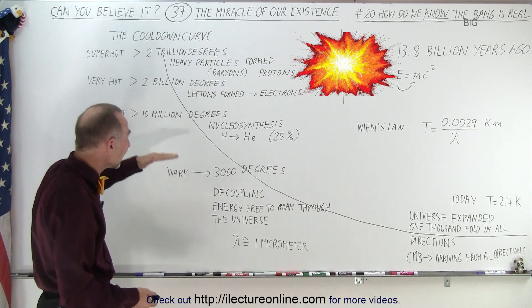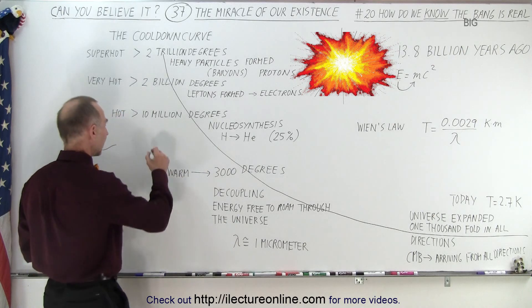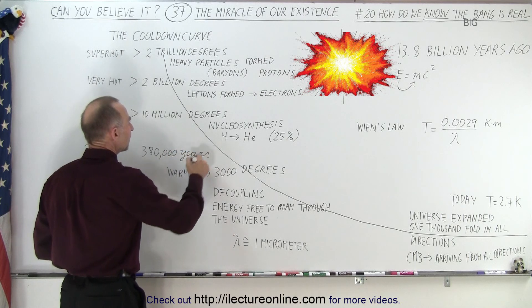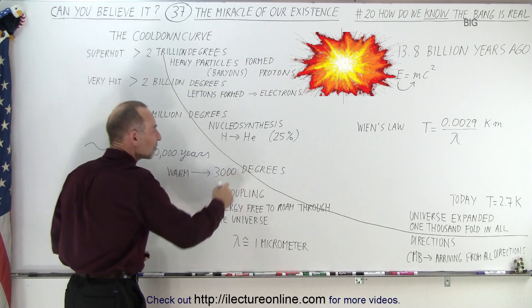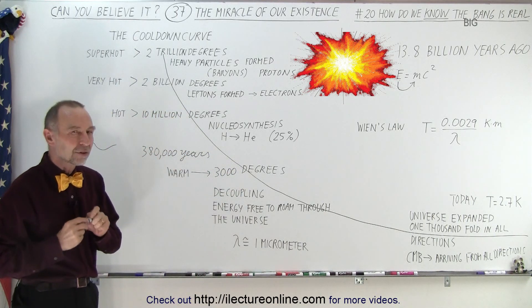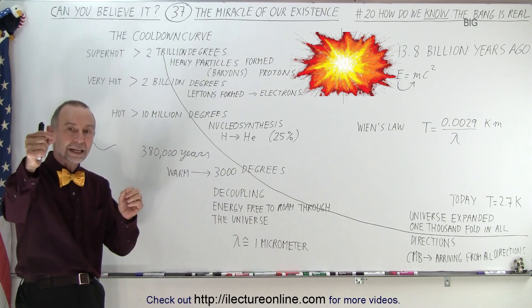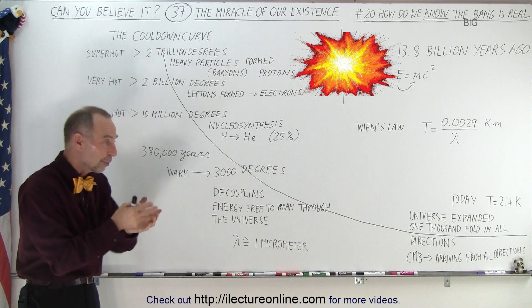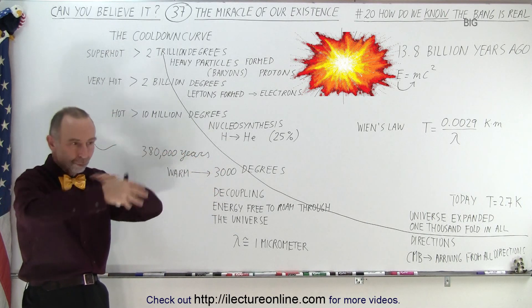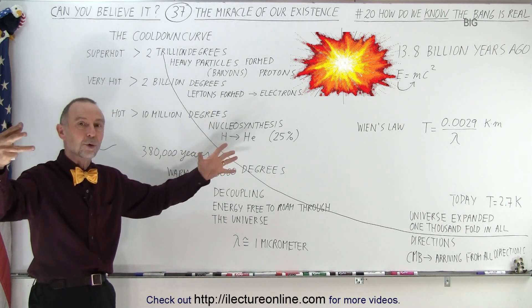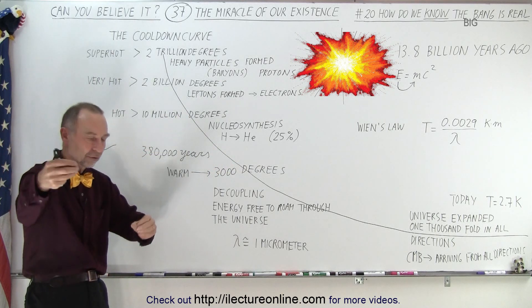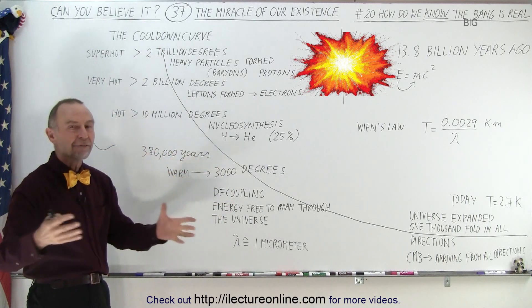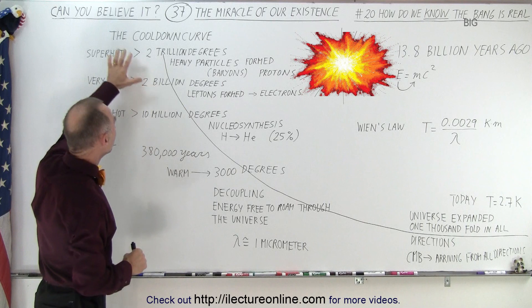Then for the next 380,000 years, for that long period of time, the universe continued to cool until it reached a temperature of 3,000 degrees. At 3,000 degrees, it's cool enough for the electrons to join the protons. The electrons will join the helium nuclei called alpha particles. And so then, from ionized hot material moving around the universe, all of a sudden you had order in the universe where the electrons joined the protons, electrons joined the alpha particles, and now we had atoms.